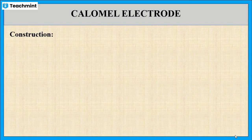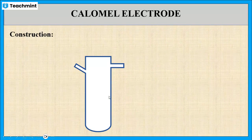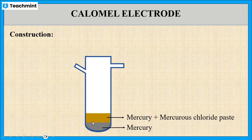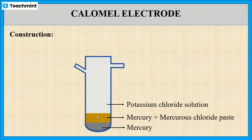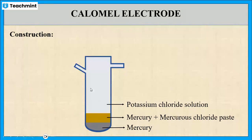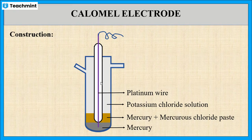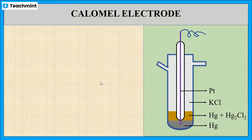Now let us see the construction of the calomel electrode. This calomel electrode mainly consists of a glass tube in which mercury is placed at the bottom. Above the mercury level, a paste of mercury and mercury chloride is placed, and the remaining space is filled with potassium chloride solution. So this glass tube contains mainly three layers: the first layer is mercury, the second layer is mercury and mercury chloride paste, and the third layer is potassium chloride solution. A platinum wire is dipped into the mercury, which is used to connect to the external circuit.